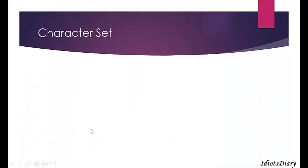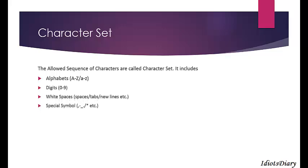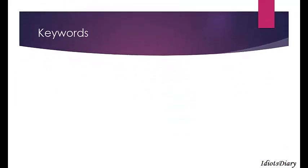Let's begin with the character set. The character set is the allowed sequence of characters in C. It includes alphabets — capital A to Z and small a to z — digits 0 to 9, white spaces including spaces, tabs, new lines, etc., and special symbols like comma, full stop, semicolon, etc.